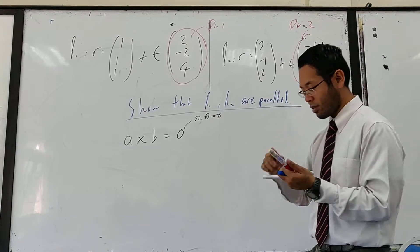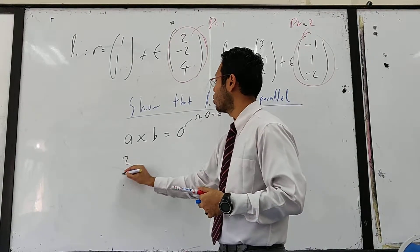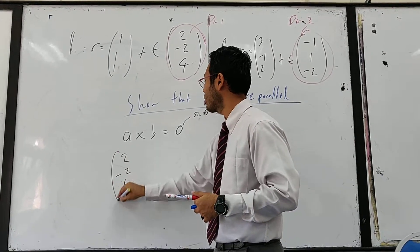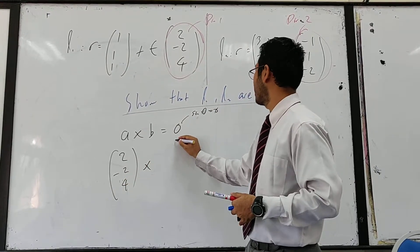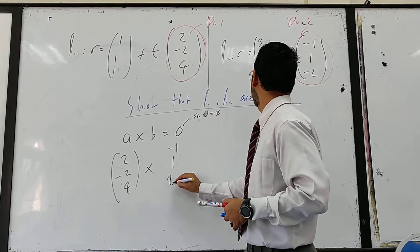So it's going to be A cross B: two, negative two, four, cross with negative one, one, two.